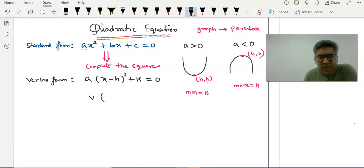The vertex will be the number which is inside the bracket h, you will take opposite sign, and the outside number you take same sign. So we get your vertex h, k. Now, let us see an example to find out the vertex.